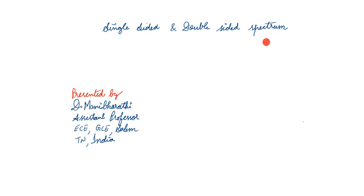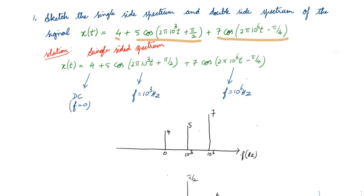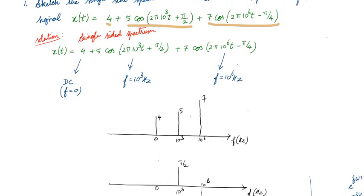So spectrum gives the magnitude and the phase angle of each frequency component. Let us get into the lecture. So this is my x(t). x(t) is made up of three components: one is 4, another is 5·cos(2π·10³·t + π/2), and the third component is 4·cos(2π·10⁶·t − π/4). First we will plot the single-sided spectrum, then move to the double-sided spectrum.